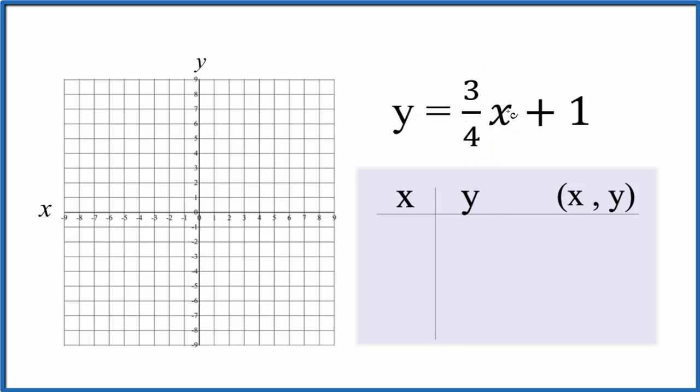First, we're going to put some values in for x here, figure out y, and then we can plot those on our graph paper. Next, we'll check our work with a slope-intercept formula just to make sure we're right. So let's see. Why don't we put some values in for x?